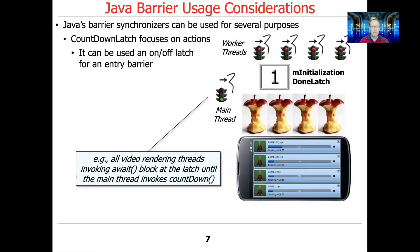A good example might be a video rendering program that has multiple threads and multiple cores, where you want all the different threads doing the video rendering to wait on a countdown latch until the main thread tells them everything's initialized and they can go. When the main thread invokes countdown, that shifts the count from one to zero and all threads start running — that's clearly an entry barrier example.